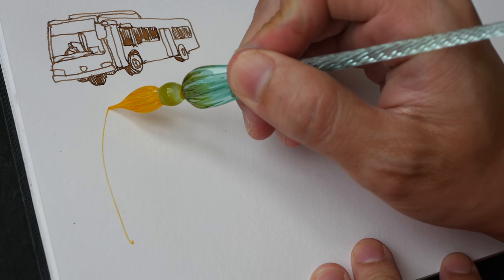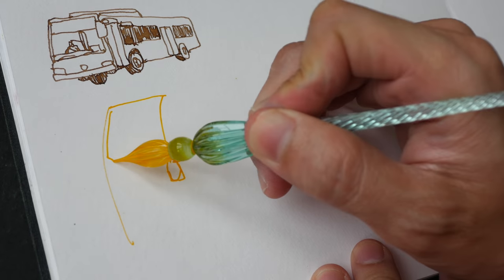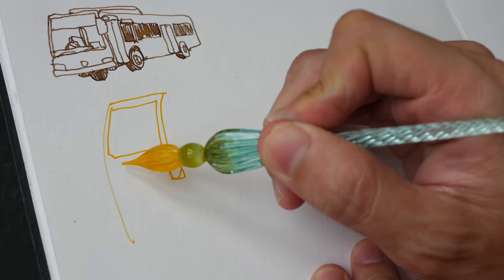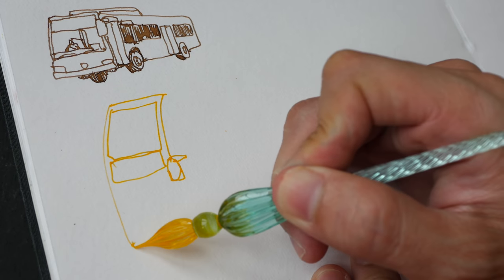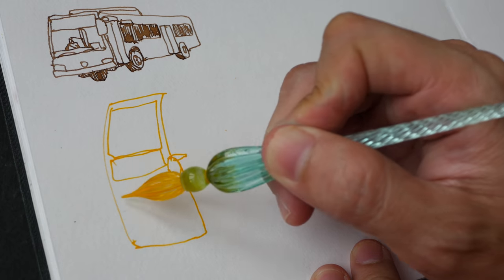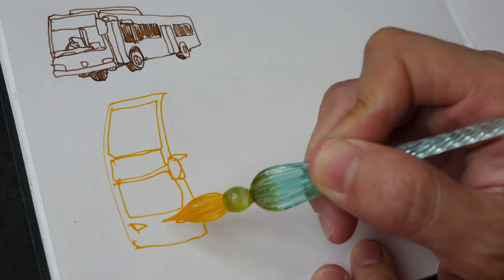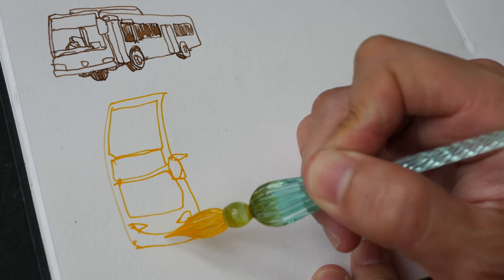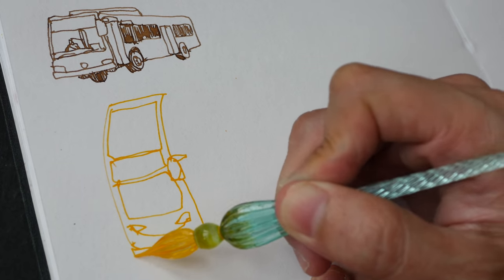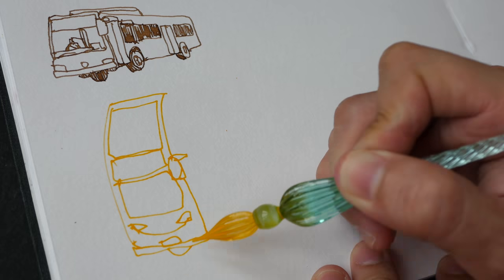So in Singapore, we have double-decker buses as well. Light colors like this are not that good for sketching because the contrast is not that strong. But the quality of the Bombay ink is fantastic. This is very vibrant.